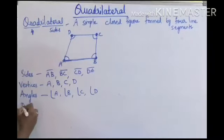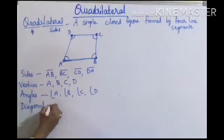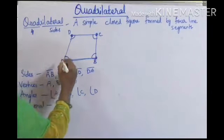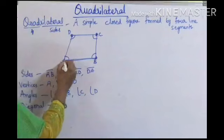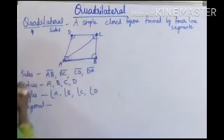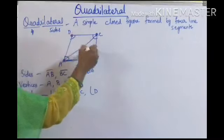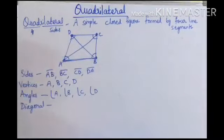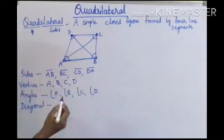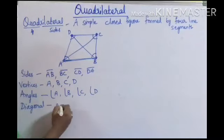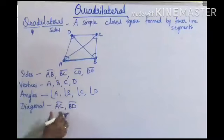Next, coming to diagonals. A diagonal is nothing but a line segment joining two opposite vertices. Here A and C are opposite — if I join these two I get a diagonal. And B and D are also opposite vertices — if I join these two I get another diagonal. So here we are getting two diagonals: AC and BD.